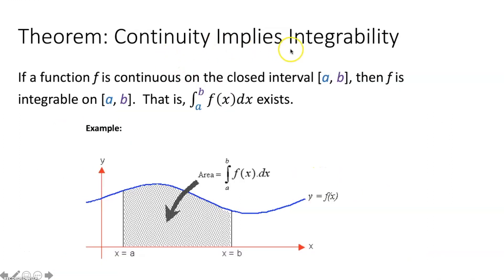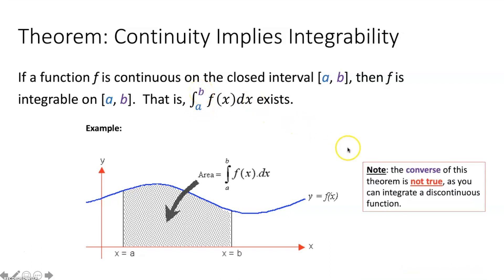Now let's talk about continuity implying integrability. If a function f is continuous on the closed interval from a to b, then f is integrable on that interval — the integral from a to b of f of x dx exists. As long as there are no discontinuities, asymptotes, holes, or jumps on the interval, you can calculate the area under the curve. However, the converse is not true: there are certain scenarios where you can still integrate a function that has a discontinuity on a given interval.